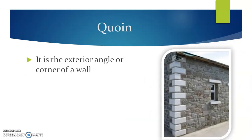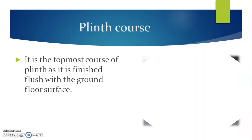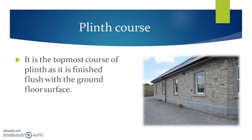Queen. A queen is the exterior angle or corner of a wall. This particular figure indicates the queen or external angle of a wall, which is 90 degrees in most cases. But in certain cases, it might be more or less than 90 degrees, due to demands of structural stability or appearance. Plinth course. It is the topmost course of the plinth, finished flush with the ground floor surface.